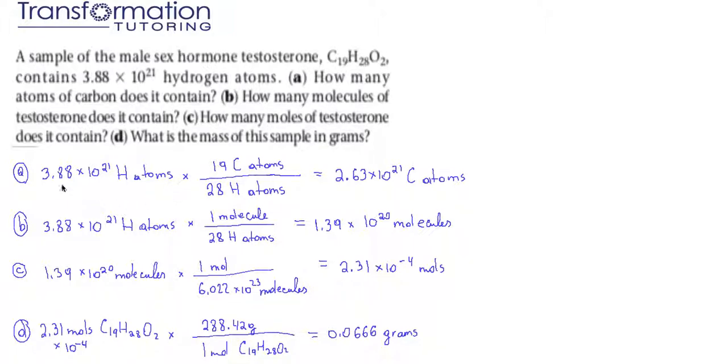We always start with what we have. So we have 3.88 times 10 to the 21st hydrogen atoms. We want to cancel hydrogen atoms and get carbon atoms. The ratio of hydrogen atoms to carbon atoms in the formula is 28 to 19. We put 28 hydrogen atoms on the bottom so these units cancel, and 19 carbon atoms on top. When we plug it into our calculator with the correct significant figures, which is 3, we get 2.63 times 10 to the 21st carbon atoms.